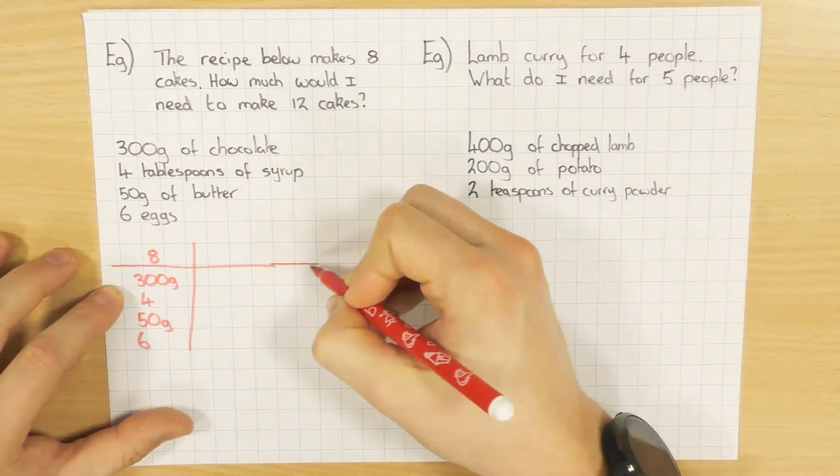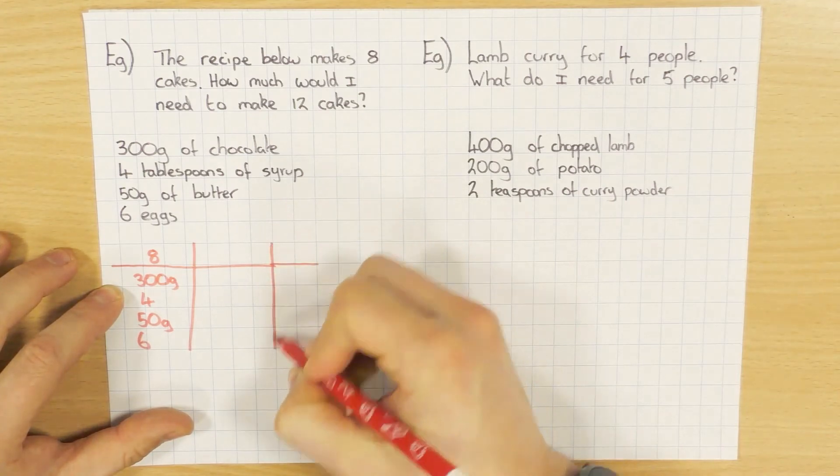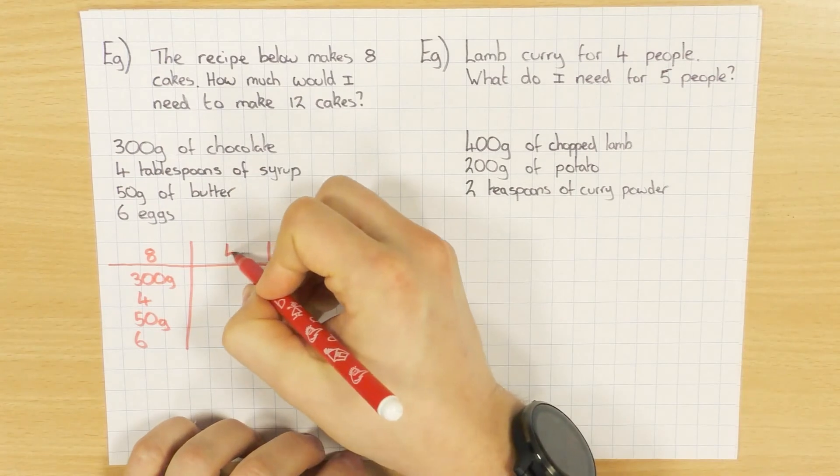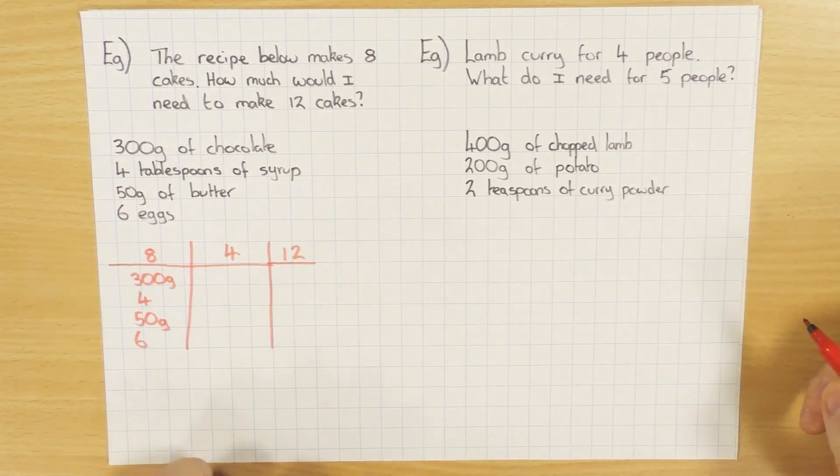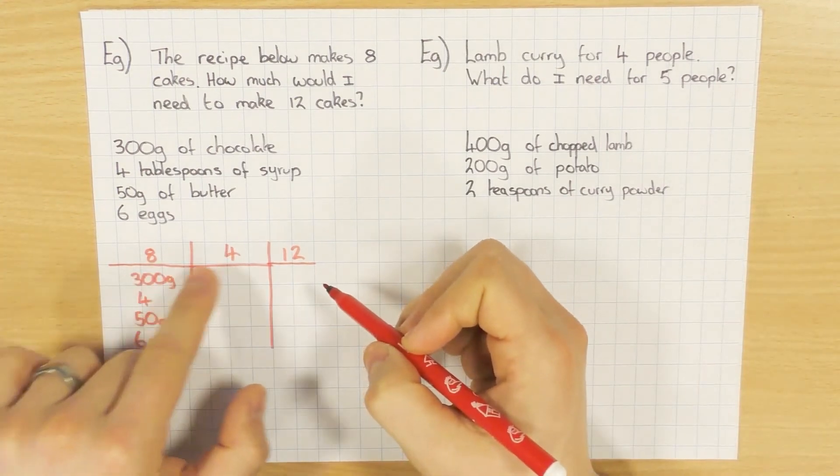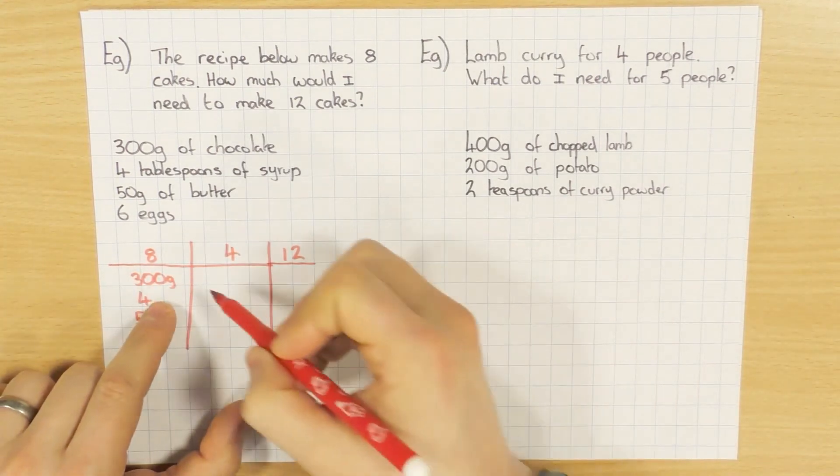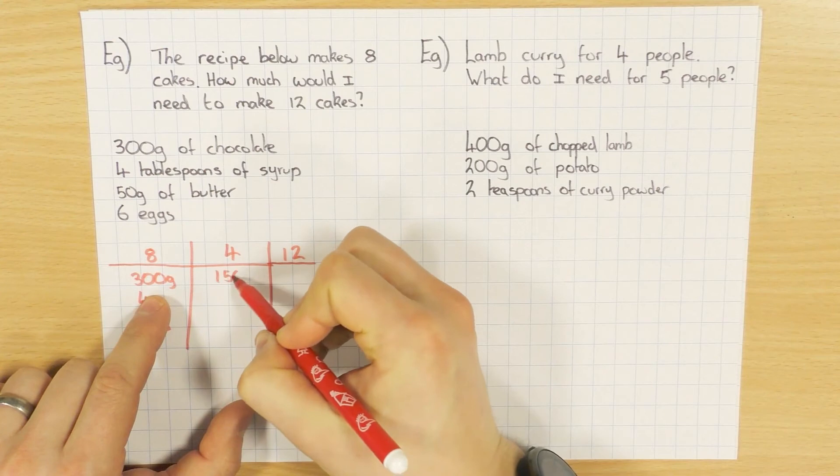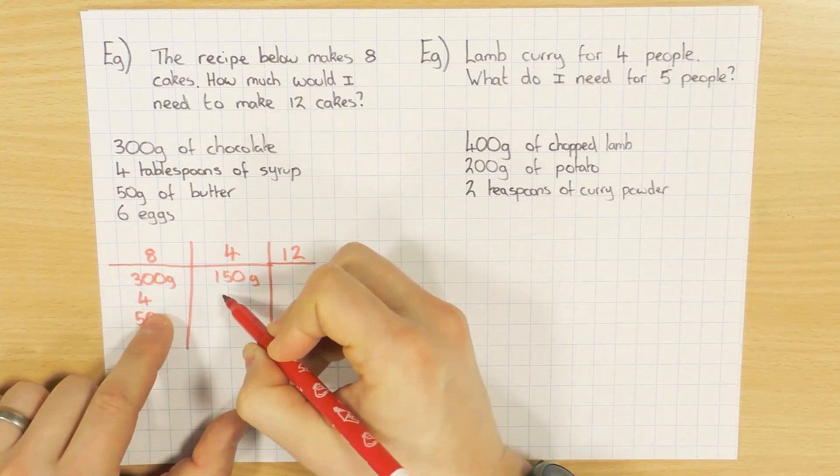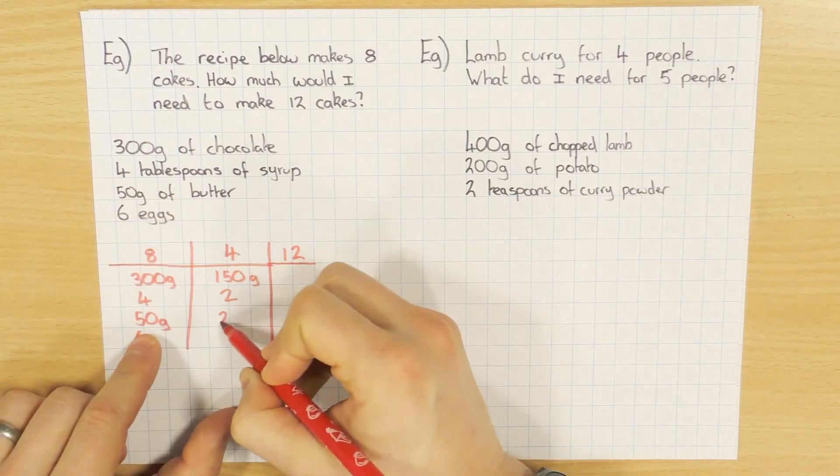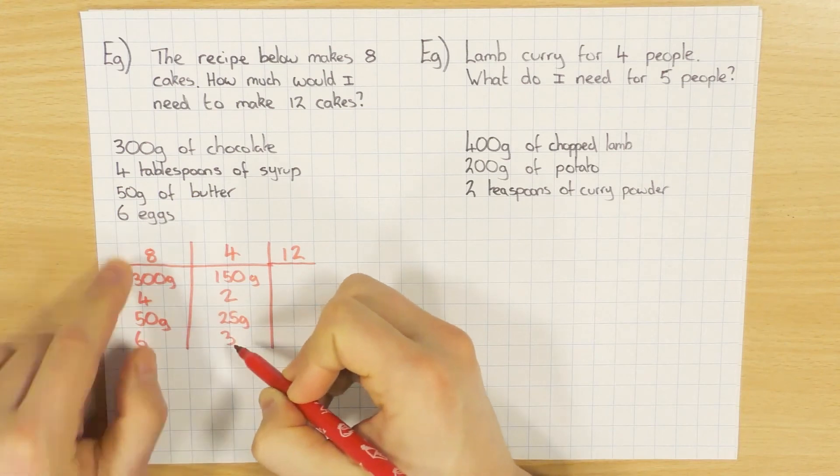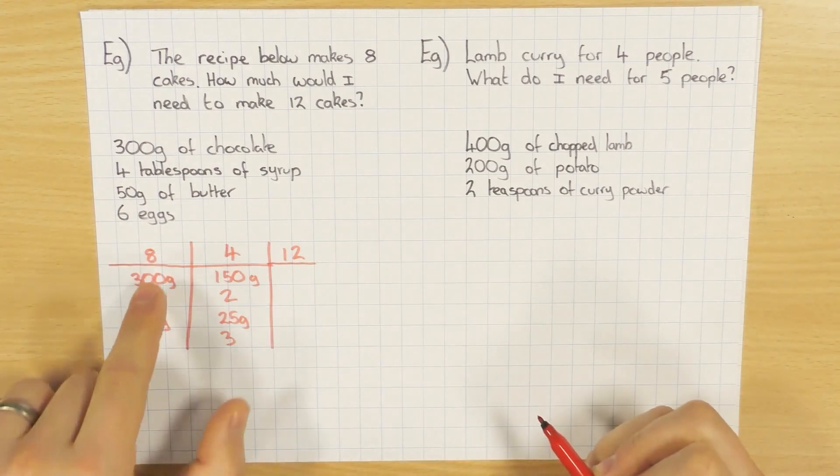And I need to get to 12 cakes. Well, what's left, I need to work out what four cakes is. So I'm not going to work out what one is because it's not quite nice. And most people are happy with this. So if eight cakes is this, I need to half the amount to get to four. So that's 150 grams. And half that, so that's two tablespoons. Half that, so that's 25 grams of butter. And half that, so that's three eggs.